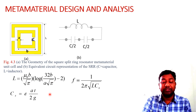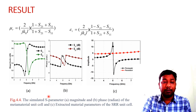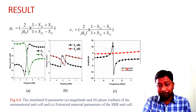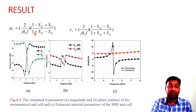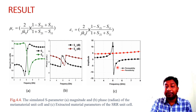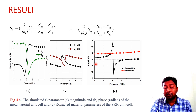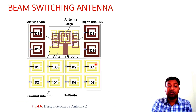Using those formulas, we calculate the values of permeability and permittivity. Here we calculate them directly using HFSS software. The black color represents the permittivity value, which is negative in the region from 5 to 6 GHz, while the permeability value is positive. We then incorporate this mu-negative material structure into our antenna design.